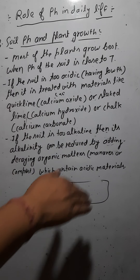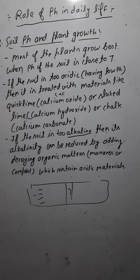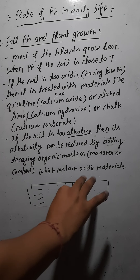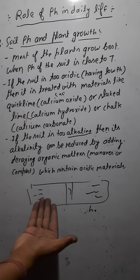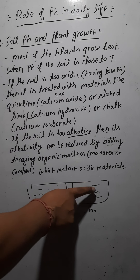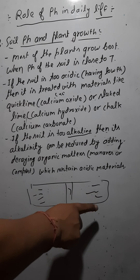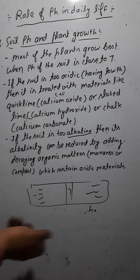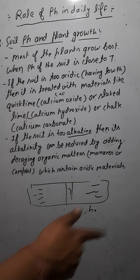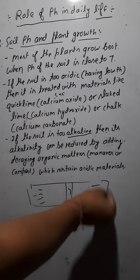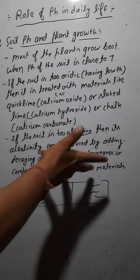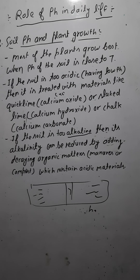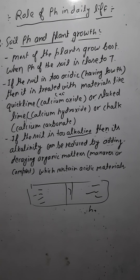If the soil becomes alkaline — pH more than 7 — you treat it with acidic substances like decaying organic matter, manures, fertilizers, or compost to decrease the pH back toward 7. This is how we maintain soil pH for good plant growth.